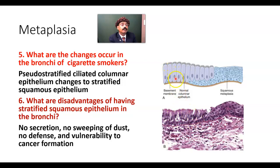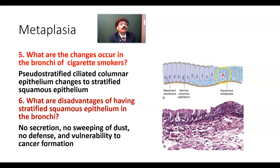This type of pseudo-stratified columnar epithelium will be converted into stratified squamous epithelium. This squamous epithelium has no cilia, so there is no sweeping of dust. It has no goblet cells, so there is no mucus secretion. It can withstand the tobacco smoke, but its function will be lost and it will be more vulnerable to develop cancer.